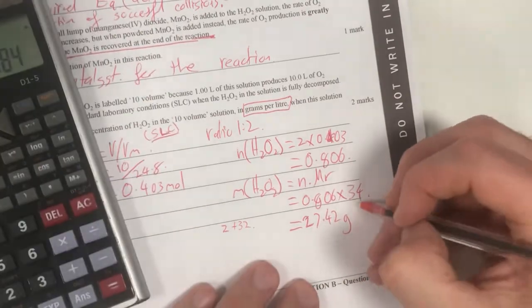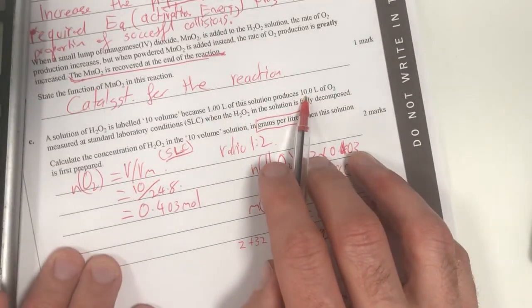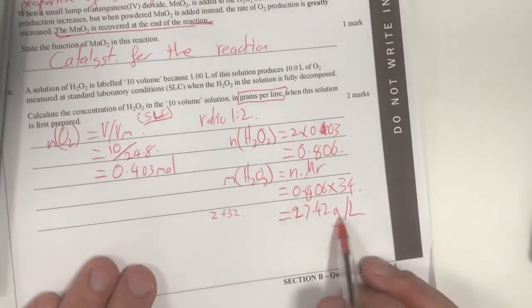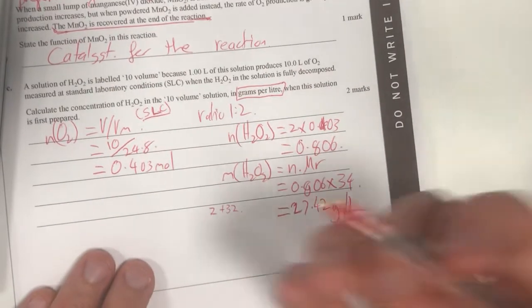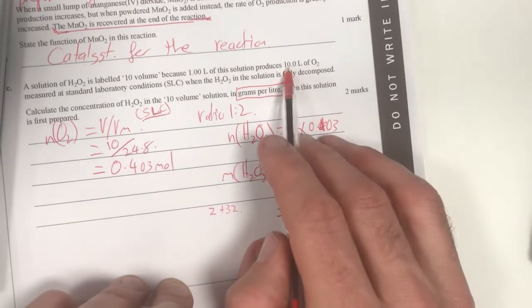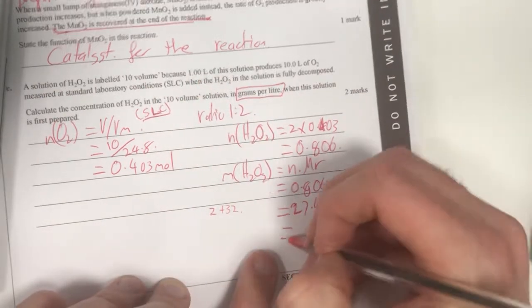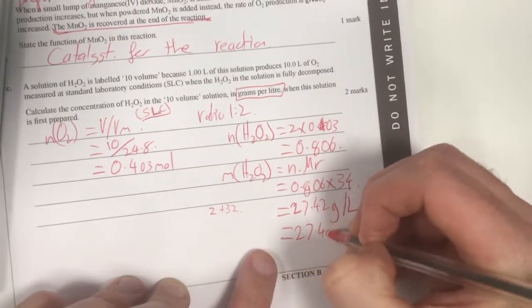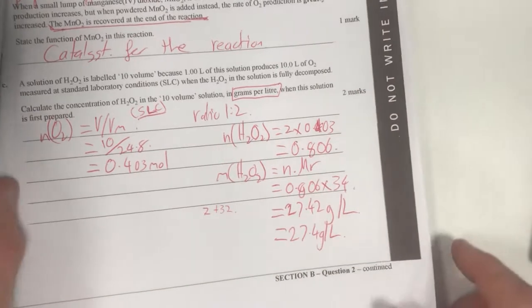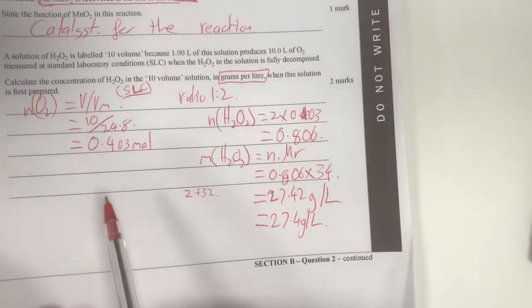Times 34 gives me 27.42 grams, and that is per litre, because I know that one litre of this solution produced my 10 litres. I do need to go back and look at sig figs - I've got three sig figs here, two sig figs here, so therefore I'm going to go to 27.4 grams per litre in my final answer there.